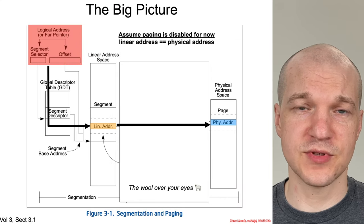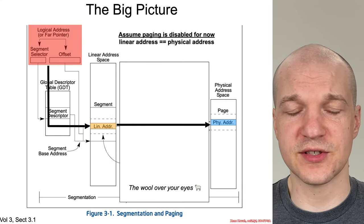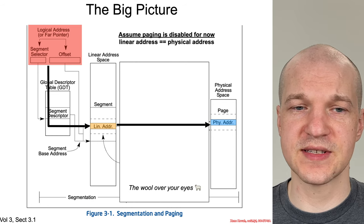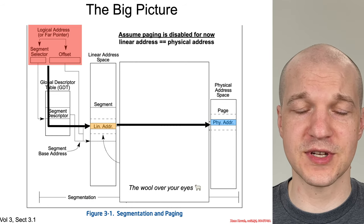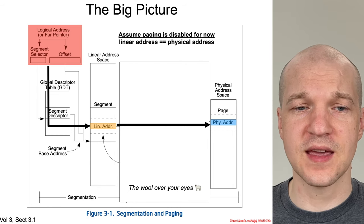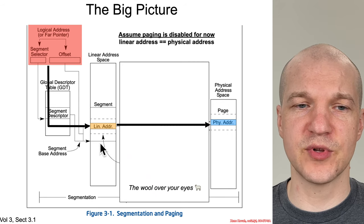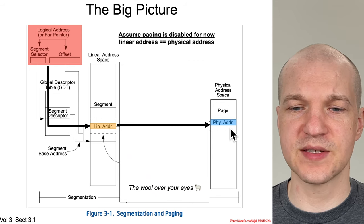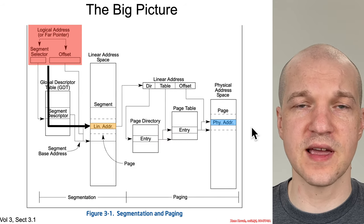So in Architecture 2001, we talked about physical address spaces, linear address spaces, virtual address spaces. And originally we talked about how if paging isn't enabled, linear addresses map directly to physical addresses.